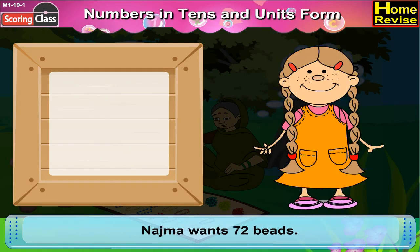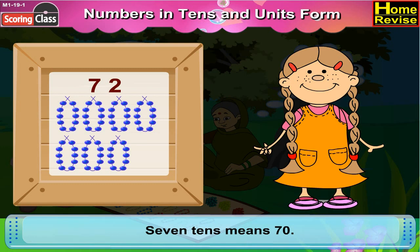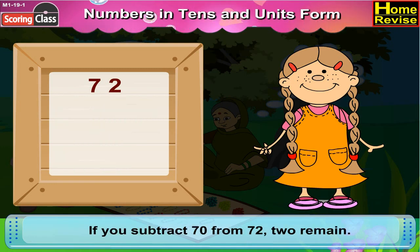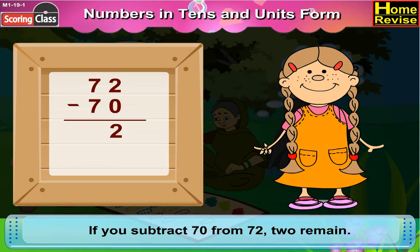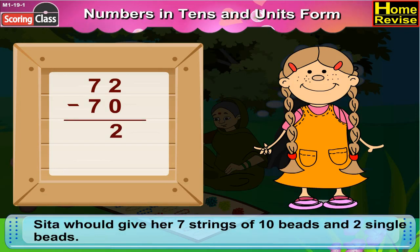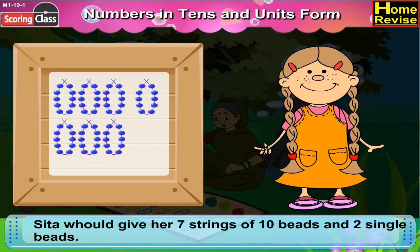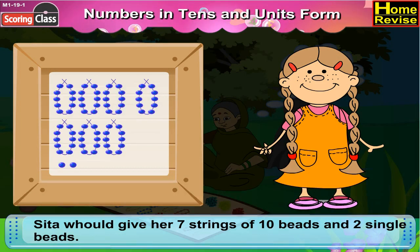Najma wants 72 beads. 7 tenths means 70. 72 minus 70 means 2 remains. Which means, Sita would give her 7 strings of 10 beads and 2 single beads.